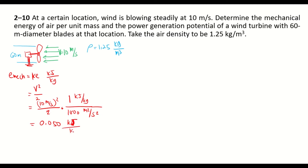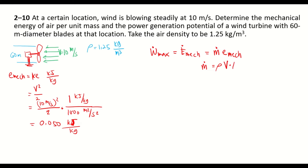To solve for the power generation potential, it is equivalent to the mechanical energy rate, which equals the mass flow rate times the mechanical energy per unit mass. The mass flow rate equals air density times average velocity times cross-sectional area. Since the blades create a circular sweep, the cross-sectional area equals pi times D squared over 4.